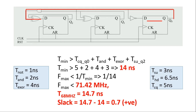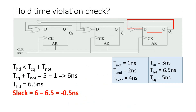However, we must also do a hold time violation analysis, which is equally important. For hold time violation checks, we choose the path with the least combinational logic delay. Out of the six register-to-register paths, the marked path has the least combinational logic delay. For no hold time violation, the hold time of the flip-flop must be less than tcq plus t_NOT.